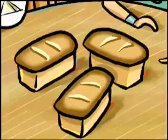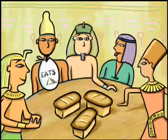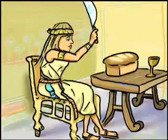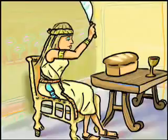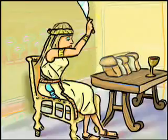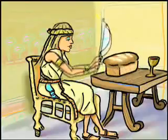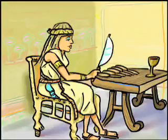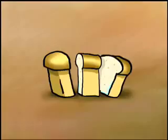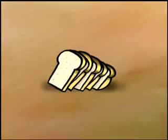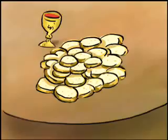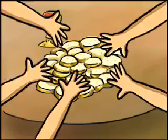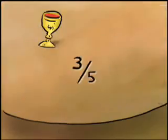If they wanted to divide three loaves of bread equally among five family members, they'd first divide the first and second loaves into thirds, then divide the third loaf into fifths. Finally, they'd take the remaining one-third from the second loaf and divide that into five pieces. They wrote this as one-third, one-fifth, one-fifteenth. Today, we would represent this sharing with the fraction three-fifths.